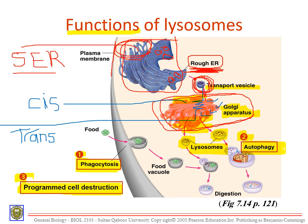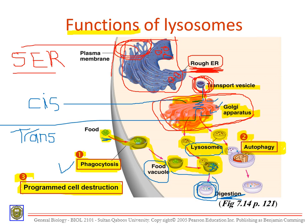Phagocytosis is cellular eating. The lysosome binds to a food vacuole — food comes in from outside the cell, forms a vacuole, and the food needs to be broken down. The lysosome binds to the food vacuole and starts breaking the food particles — that is digestion, also called phagocytosis.